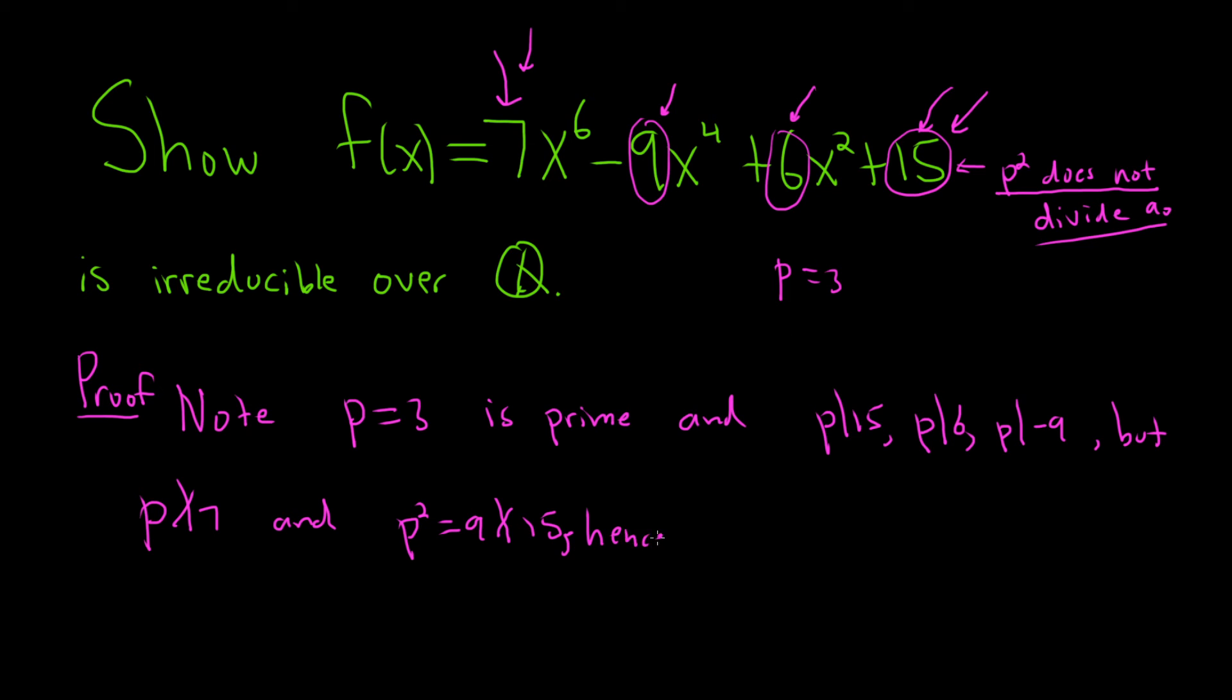So hence f of x is irreducible, irreducible over Q by Eisenstein's criterion.